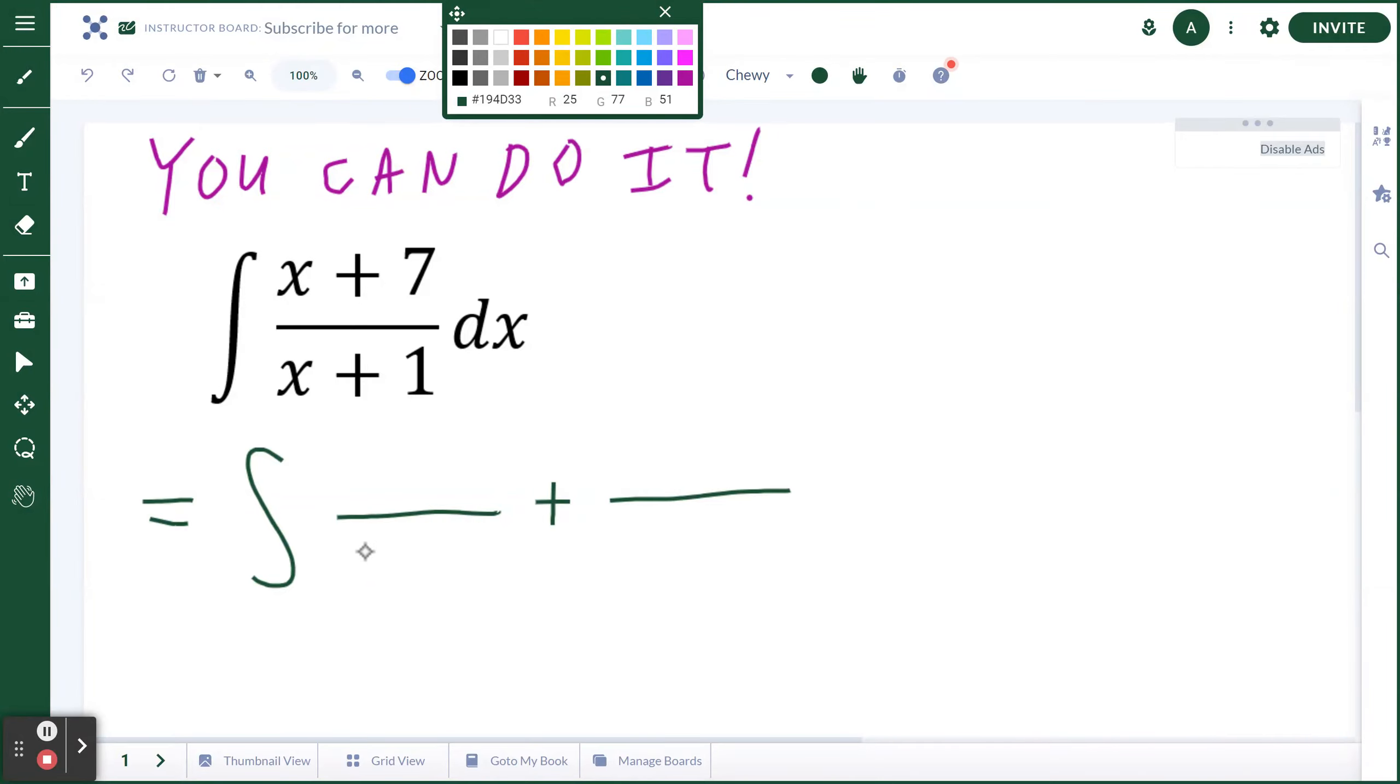If you look at the common denominator, some students call this the common d, common denominator is x+1. Now what about the numerator? When you think about x+7, break this into x+1 plus 6.